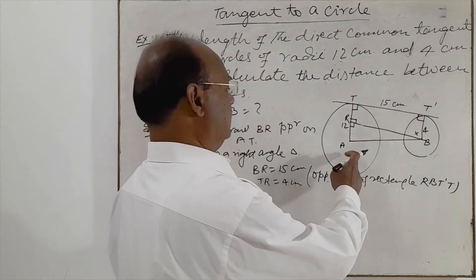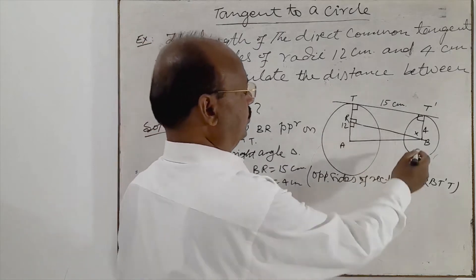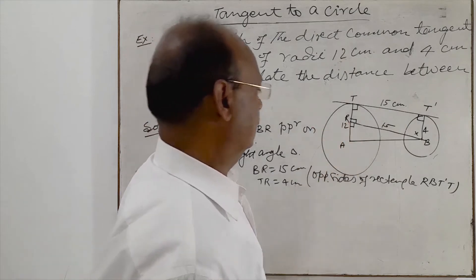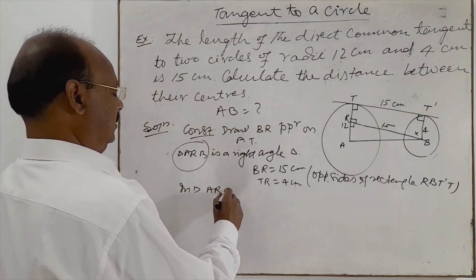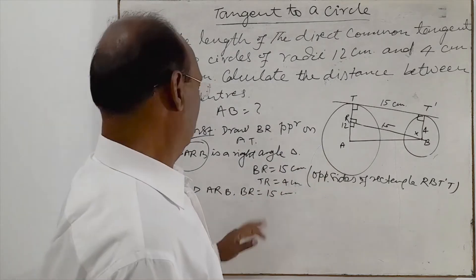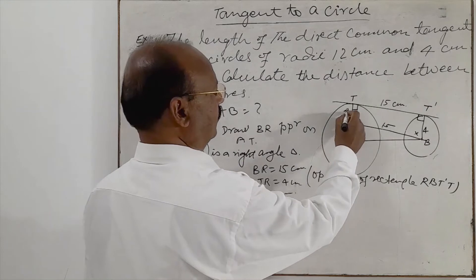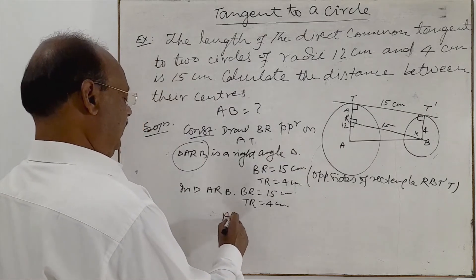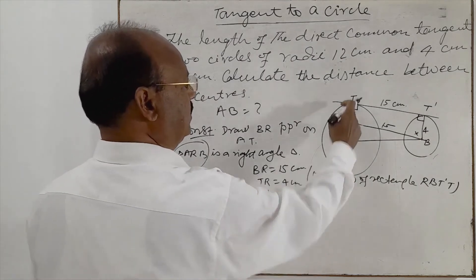Now we will work with right angle triangle ARB. In this right angle triangle ARB, BR is 15 centimeter. And AR will be how much? It is 8 centimeter. In triangle ARB, BR is 15 centimeter and TR is 4 centimeter. Therefore AR is equal to AT minus TR. AT is 12 centimeter, so AR equals 12 minus 4, which is 8 centimeter.